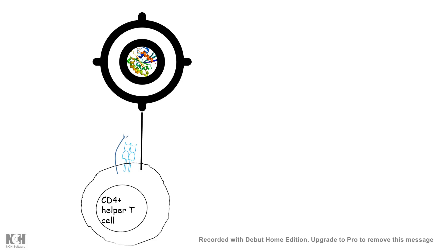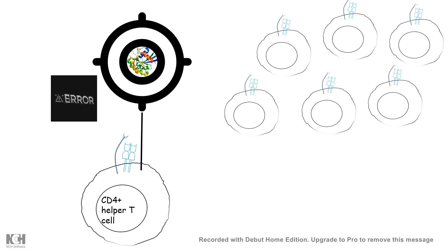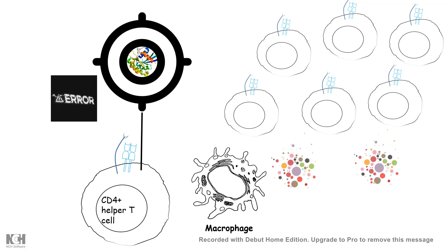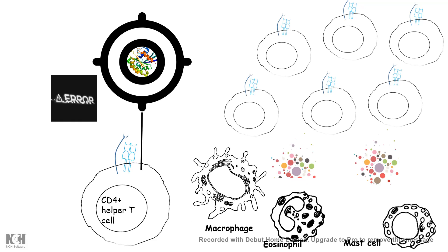Normally, T cells would mount a specific response against an antigen, recognizing it with the help of antigen presenters. But superantigens create an error in this specific detection system — instead, they non-specifically allow proliferation and activation of T cells. Once T cells are non-specifically activated, they secrete huge amounts of cytokines that bring in many other immune cells like macrophages, eosinophils, and mast cells into the specific region.